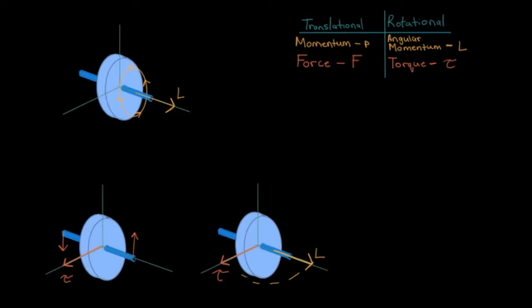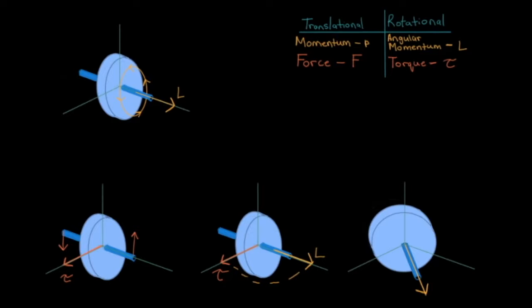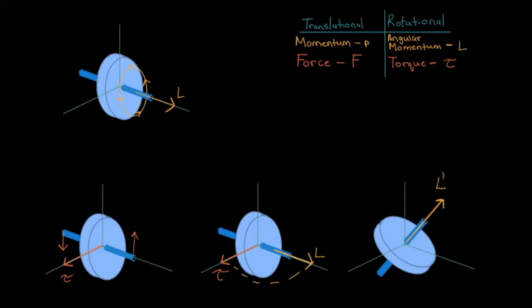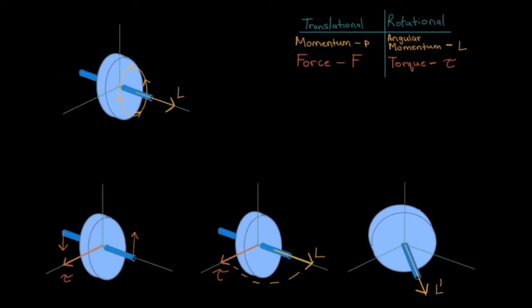That is, the angular momentum changes to follow the torque. The new angular momentum L' will point somewhere in between the original angular momentum and the torque. As you can see, the wheel behaves in a seemingly unnatural way. One might think that when a wheel is torqued in a certain direction, the wheel would just rotate in that direction. But under gyroscopic conditions — that is, when the wheel is spinning — it will actually tilt or precess to follow the torque vector. And that is gyroscopic precession.